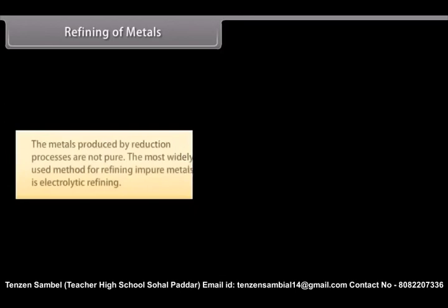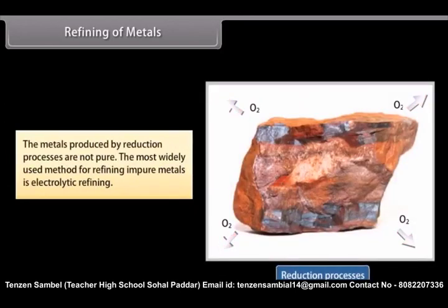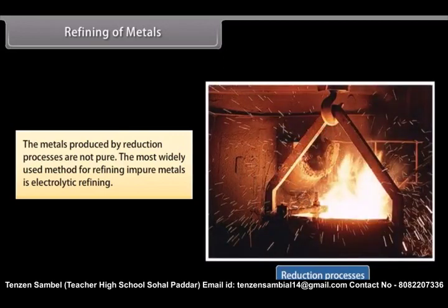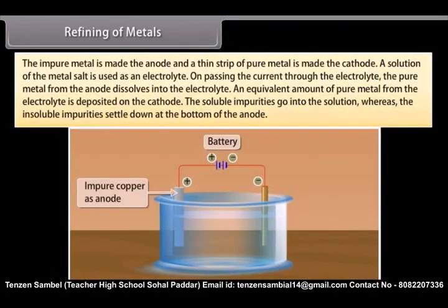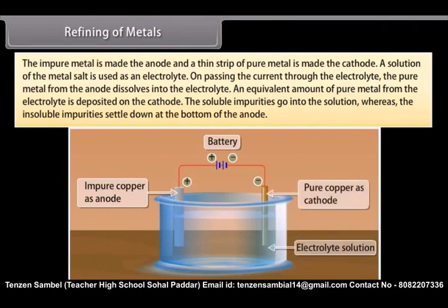Refining of metals. The metals produced by reduction processes are not pure. They still contain impurities which must be removed to obtain pure metals. The most widely used method for refining impure metals is electrolytic refining. Many metals are refined electrolytically. The impure metal is made the anode and a thin strip of pure metal is made the cathode. A solution of the metal salt is used as an electrolyte. On passing the current through the electrolyte, the pure metal from the anode dissolves into the electrolyte. An equivalent amount of pure metal from the electrolyte is deposited on the cathode. The soluble impurities go into the solution whereas the insoluble impurities settle down at the bottom of the anode. These are known as anode mud.